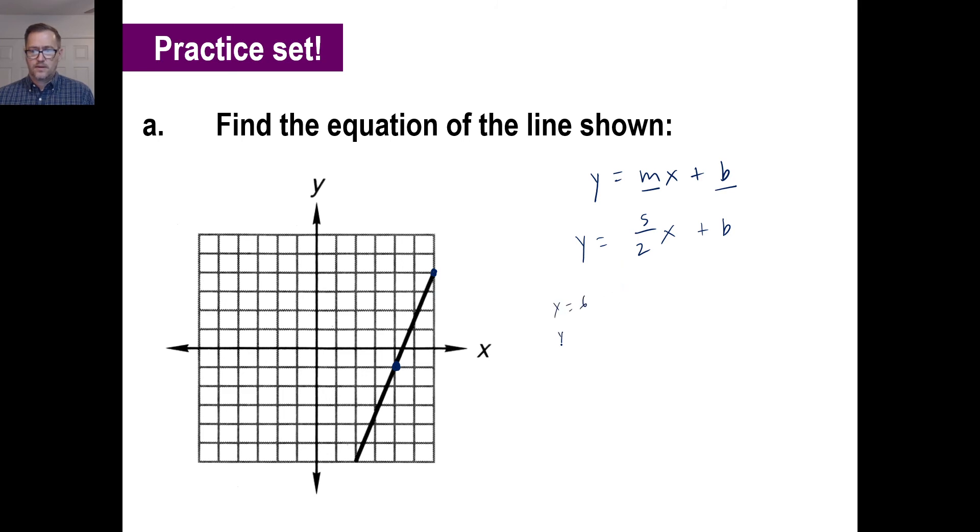So, in other words, X is six and the Y is four. We'll just stick it right into here. So, we got Y is four. Four is five halves times X, which is six, plus B. Well, five times six is 30. Divided by two is 15. So, four equals 15 plus B. B is equal to four minus 15, or negative 11. And there we go.